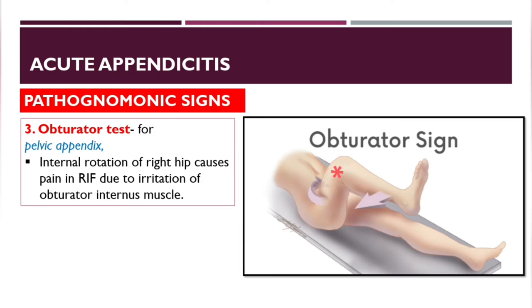The Obturator sign is specific for pelvic appendicitis: internal rotation of the right hip causes pain in the right iliac fossa due to irritation of the obturator internus muscle.